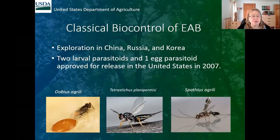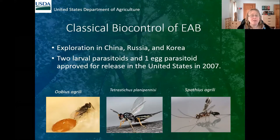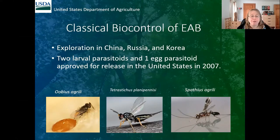I've been working since the early 2000s on biocontrol of emerald ash borer. I've been to China and Korea, and other colleagues have been to Russia, looking for natural enemies that attack the emerald ash borer. In 2007, we got permission to release three parasitic wasps. One is Oobius agrili, which attacks the eggs. We also got permission to release two larval parasitoids: Tetrastichus planipennis, which is very small, and Spathius agrili, which is a little bigger. We started releases in 2007.